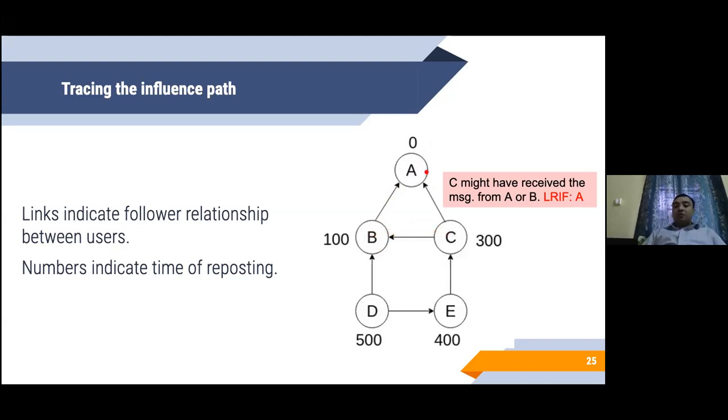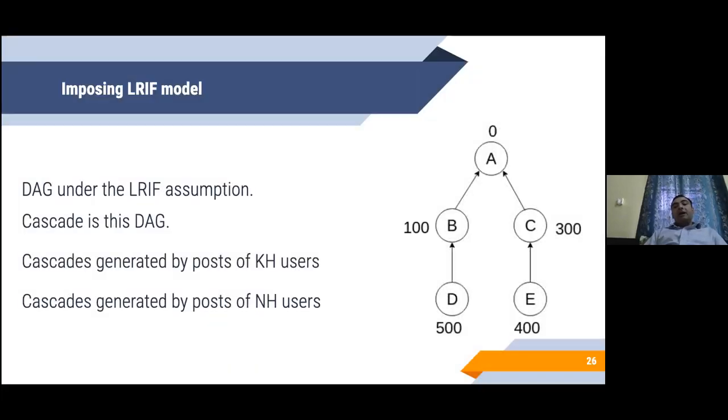The question is, whom do you assume C's influencer to be? Is A the influencer of C? Has C seen the message from A or has C seen the message from B? A has posted it at time 0 and B has posted it at time 100. Since C follows both B and A, it might have observed the message from A or B. In order to resolve this dichotomy, we use a least recent influencer model. We assume that A is the person from whom C might have received the message. We consider that A is the influencer of C. Once we do this, we now have a directed acyclic graph.